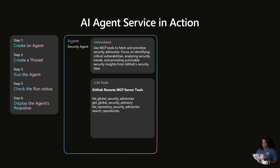We're going to connect through the GitHub Remote MCP server tools. The tools I'm using are: list global advisories, get global advisory security, list repository security advisories, and search repositories. With these different tools, we're able to pull in specific insights directly from the MCP connection.